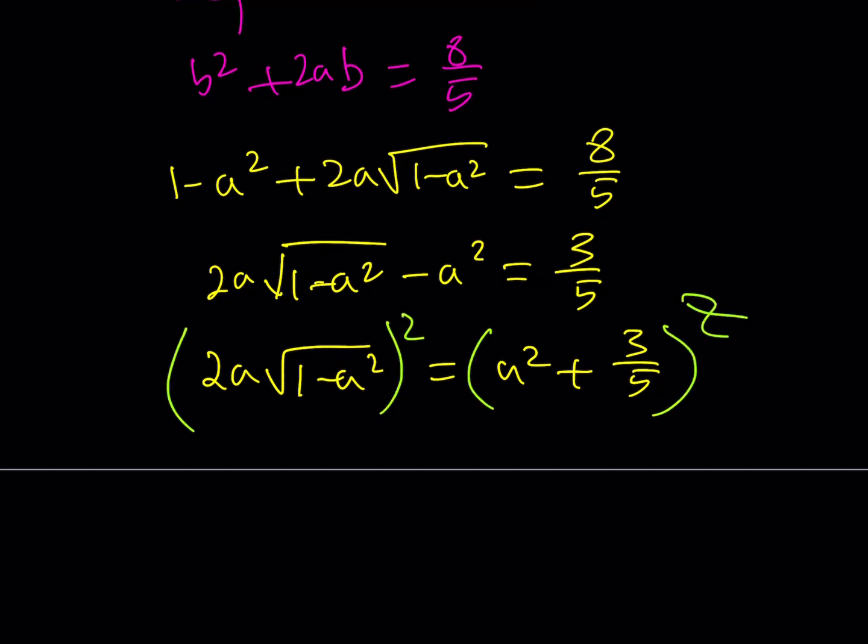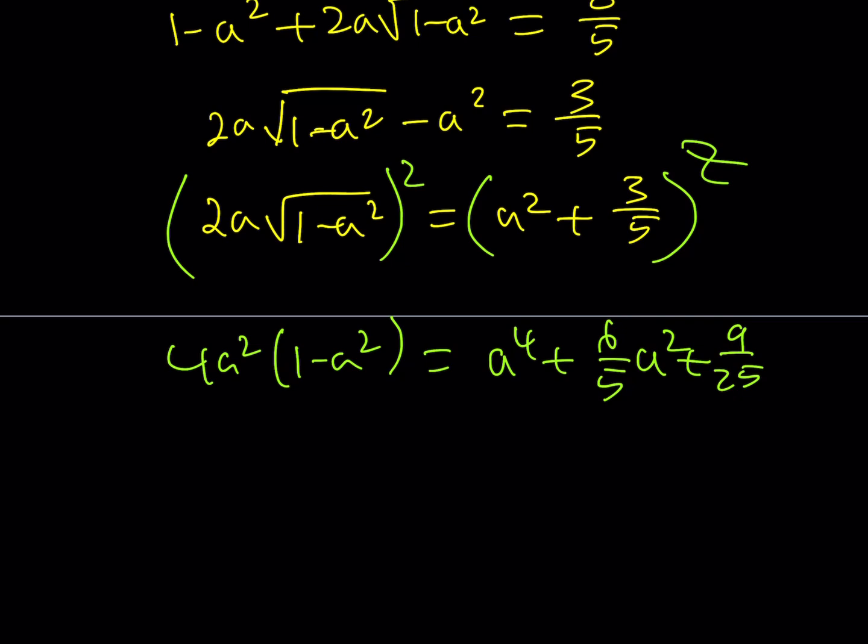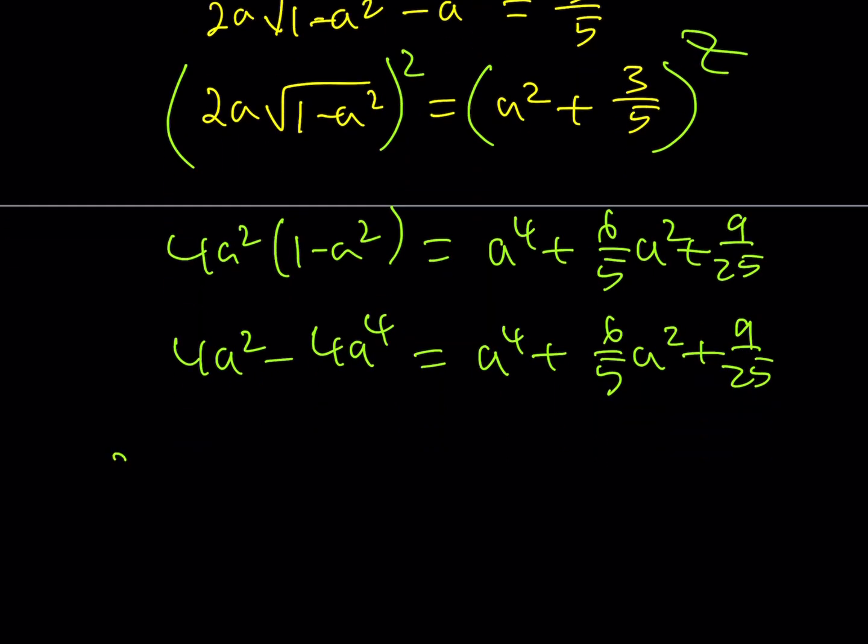I'll be squaring both sides. This is going to give me 4a²(1 - a²) and this should give me a⁴ + 6/5 a² + 9/25. So I'd like to multiply everything by 25. Let me go ahead and distribute this first. I'm going to be getting this one and then obviously I want to clear the fractions. So I'd like to multiply everything by 25.